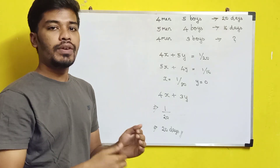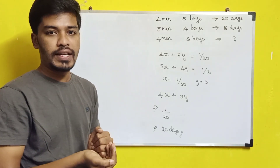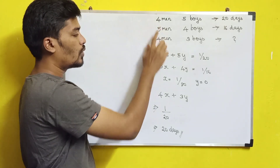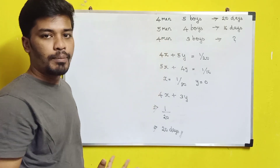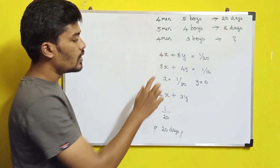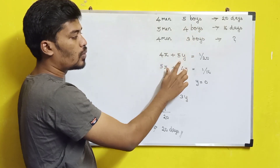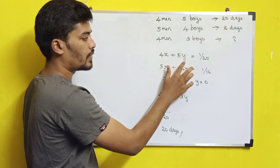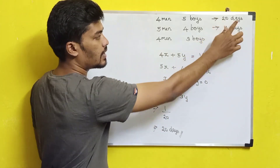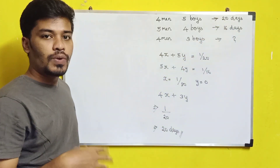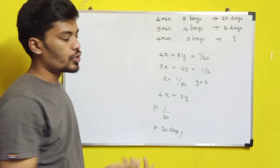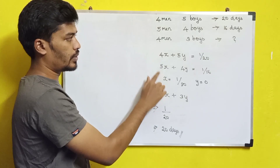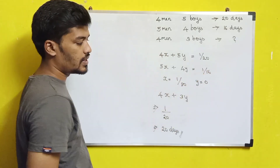So how do we solve this? We will use the simultaneous equations method. Let's look at the two equations. We don't know the work rate of one man, so that's x. We don't know the work rate of one boy, so that's y. So 4x plus 5y is equal to 1 by 20, because work and time are inversely proportional. That's the second equation: 5x plus 4y is equal to 1 by 16.